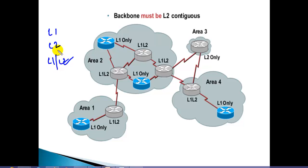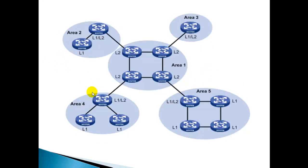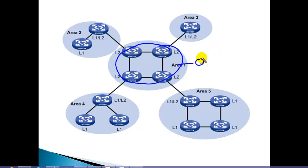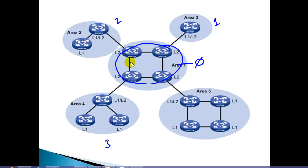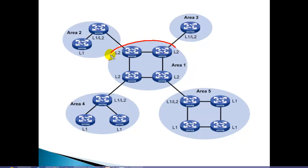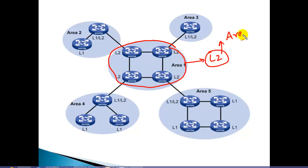Now let us look at one more design scenario, which is slightly different from the previous one. This is also a valid scenario. In OSPF we have Area 0 communicating with Area 1, 2, 3, and 4 — to connect any area to another you must go through Area 0. We can do a similar thing in IS-IS, but in IS-IS there is no specific Area 0. Instead, we maintain a contiguous set of routers with Level 2, which acts as the backbone.